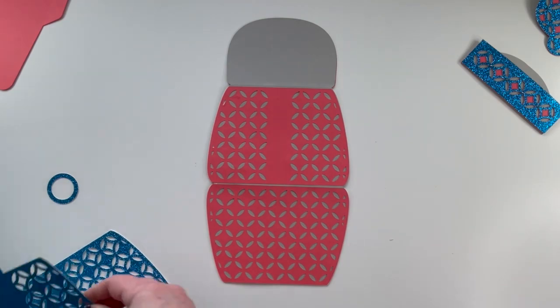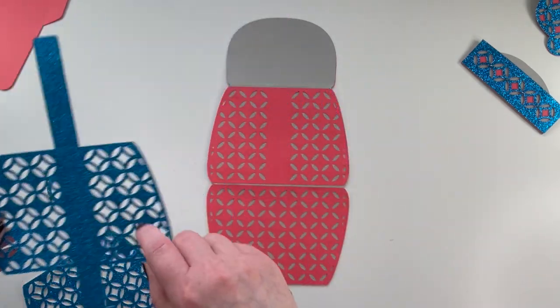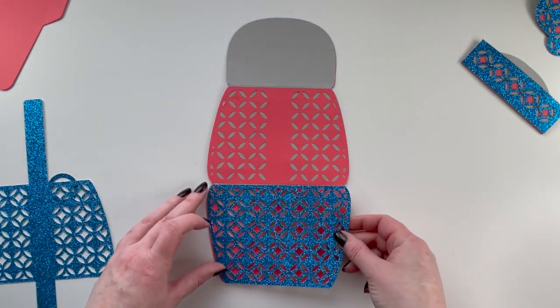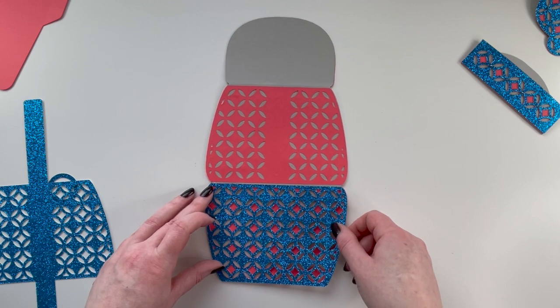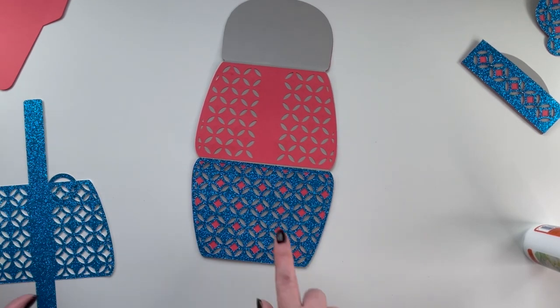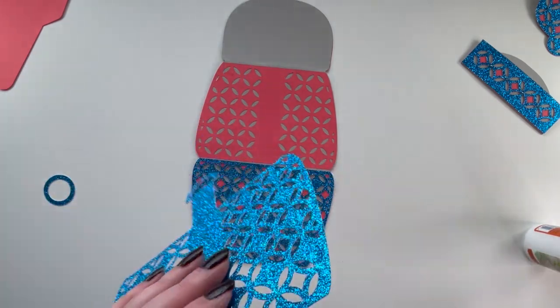That lines up with that piece there, but you don't want to put this piece on first. Take the single one and attach that to the bottom. So there's that piece attached.